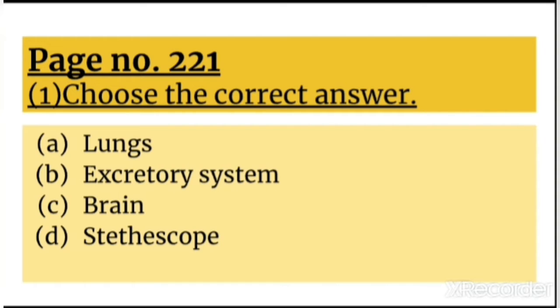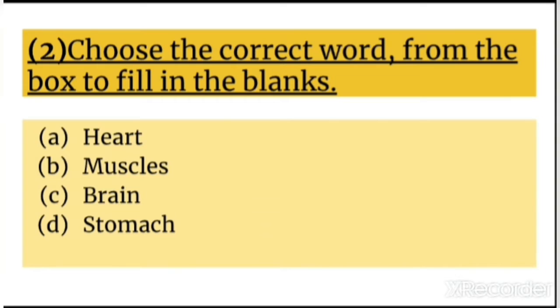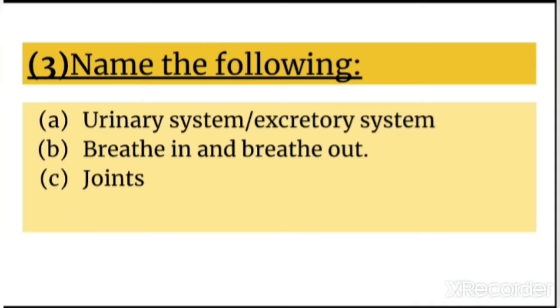Second is excretory system, third is brain, and fourth is stethoscope. Second question: choose the correct word from the box to fill in the blanks. First answer is heart, second is muscles, third is brain, and fourth is stomach. Question third: name the following.